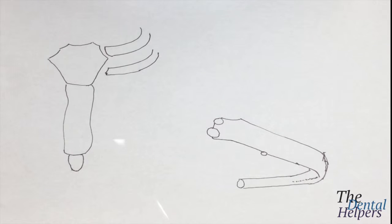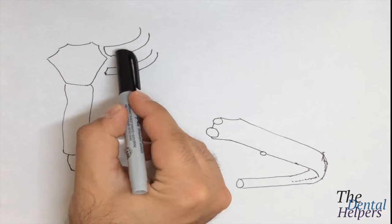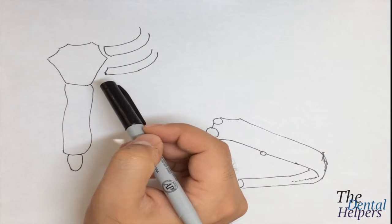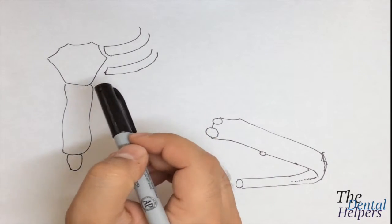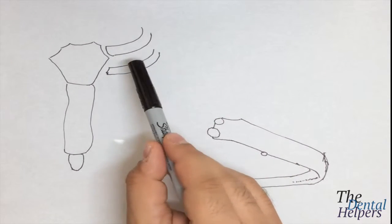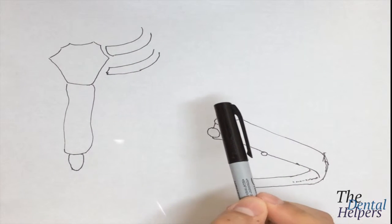So we're going to first start with the definition of the intercostal space. The intercostal space is the space between the rib bones, and there are three muscles that close this space.